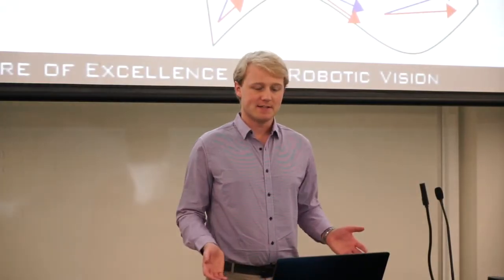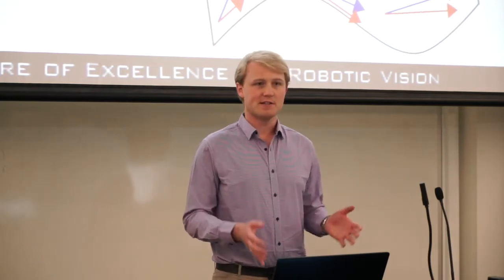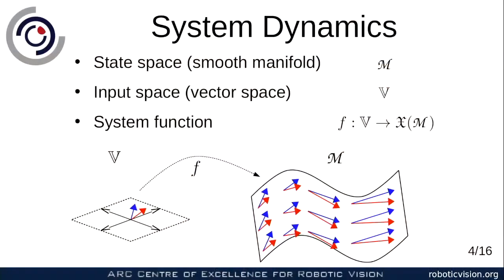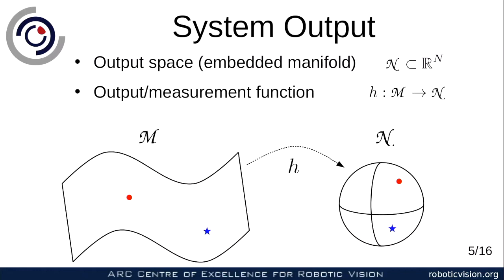Let's talk about the system dynamics. We have a state space, a smooth manifold M, and an input space which is a vector space V. Then we suppose there's a system function F, which for any vector in the input space gives a vector field on the manifold. Since we're designing an observer, we need an output function as well. This is a map H from the smooth manifold — the state space M — to another manifold, an output space N, which for simplicity in this paper we assume is embedded in some sufficiently high-dimensional Euclidean space.